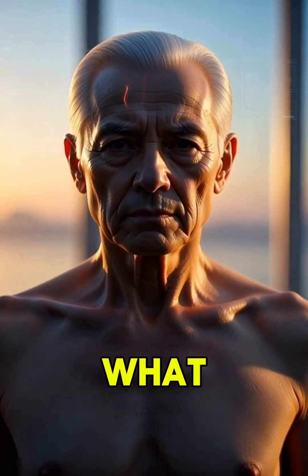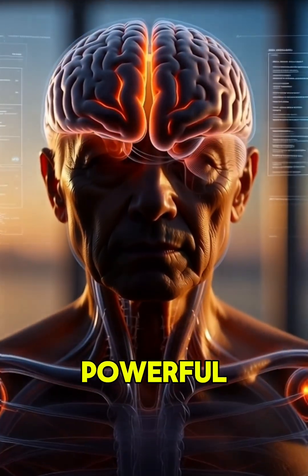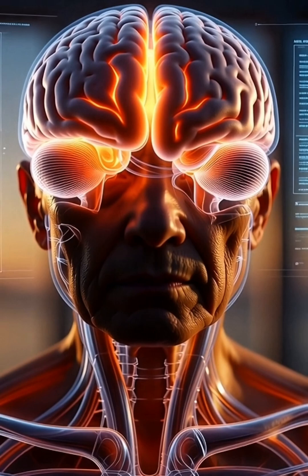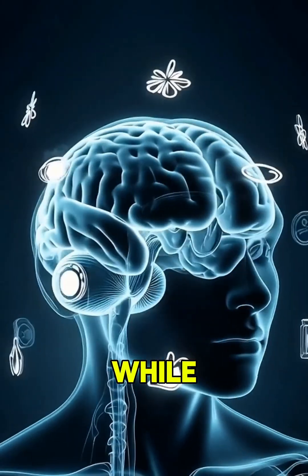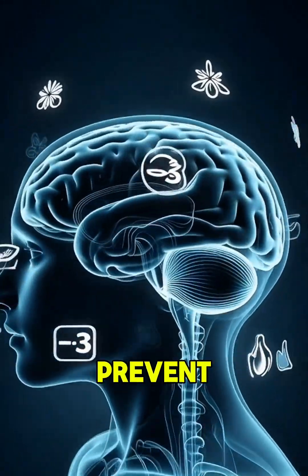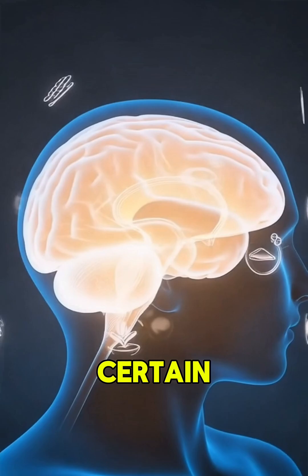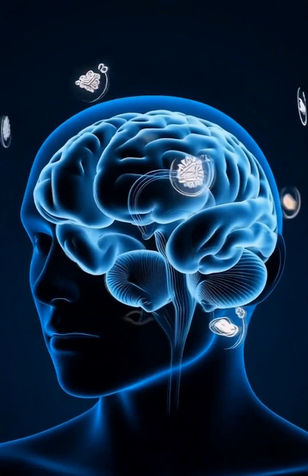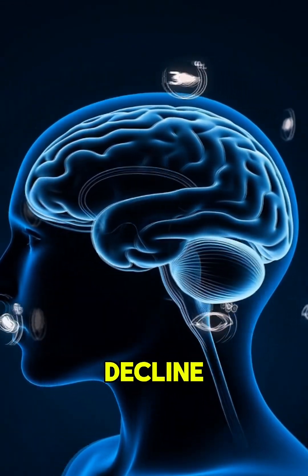Scientists now believe that what you eat can play a powerful role in protecting your brain as you age. And while there is no single food that can prevent Alzheimer's, certain nutrients have been consistently linked to slower memory decline.